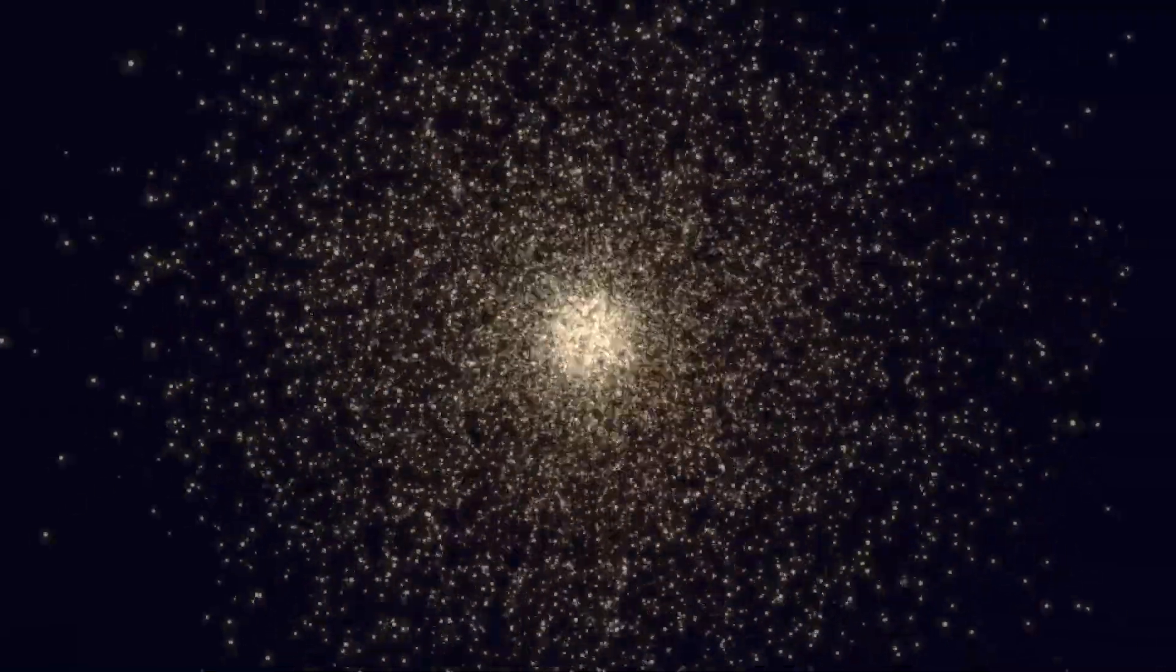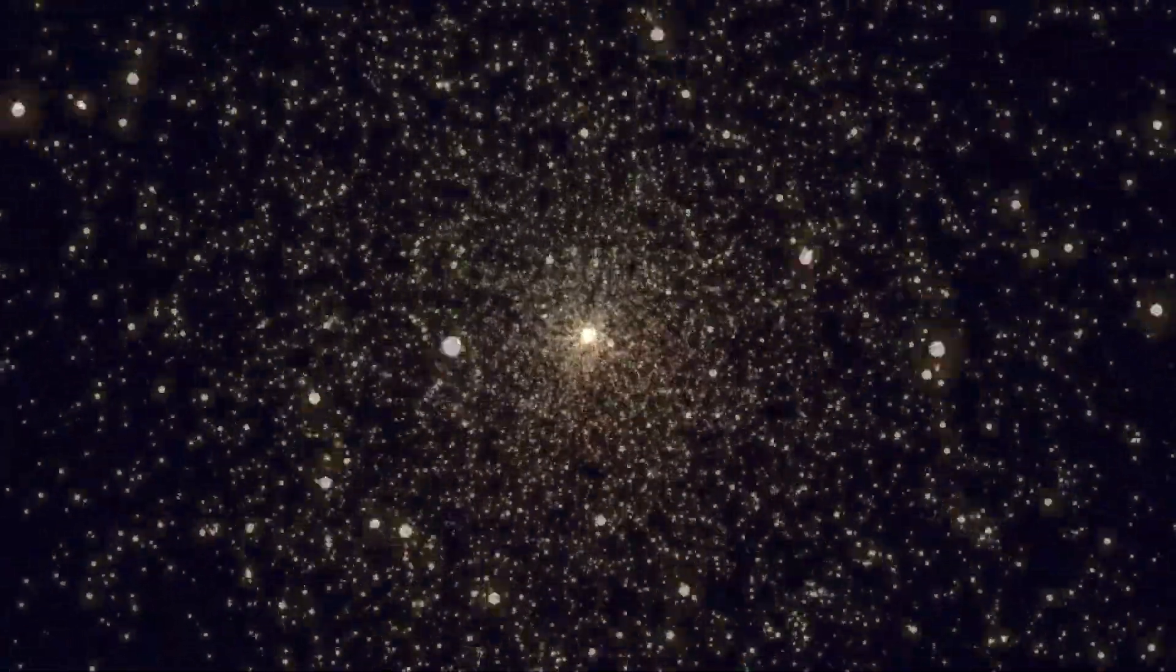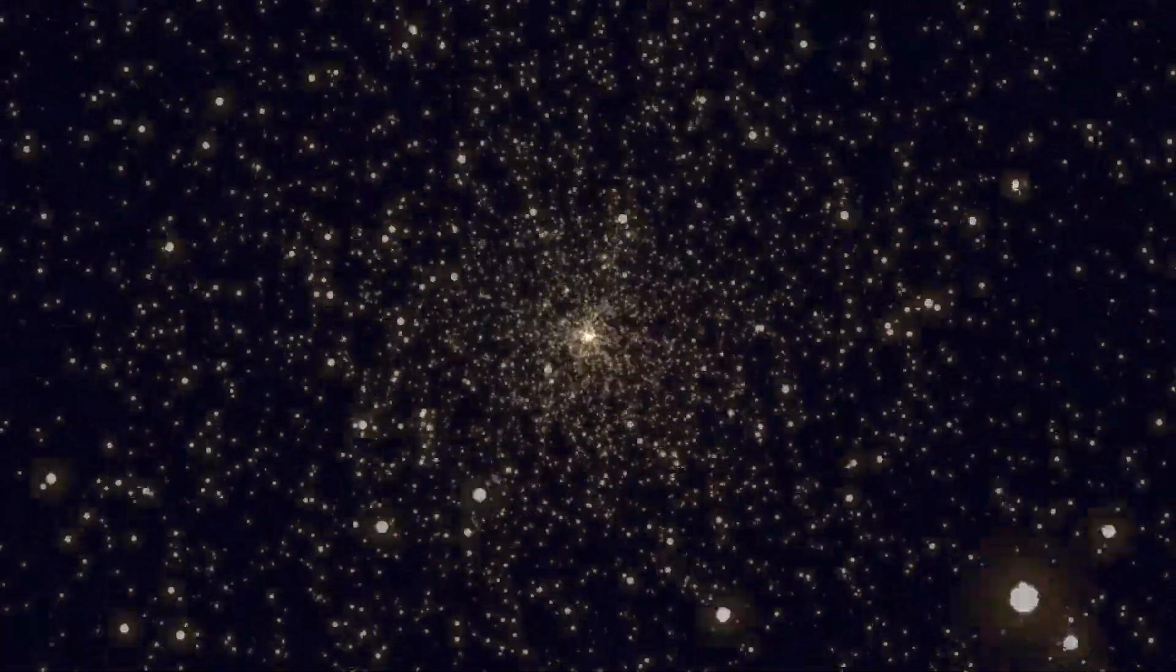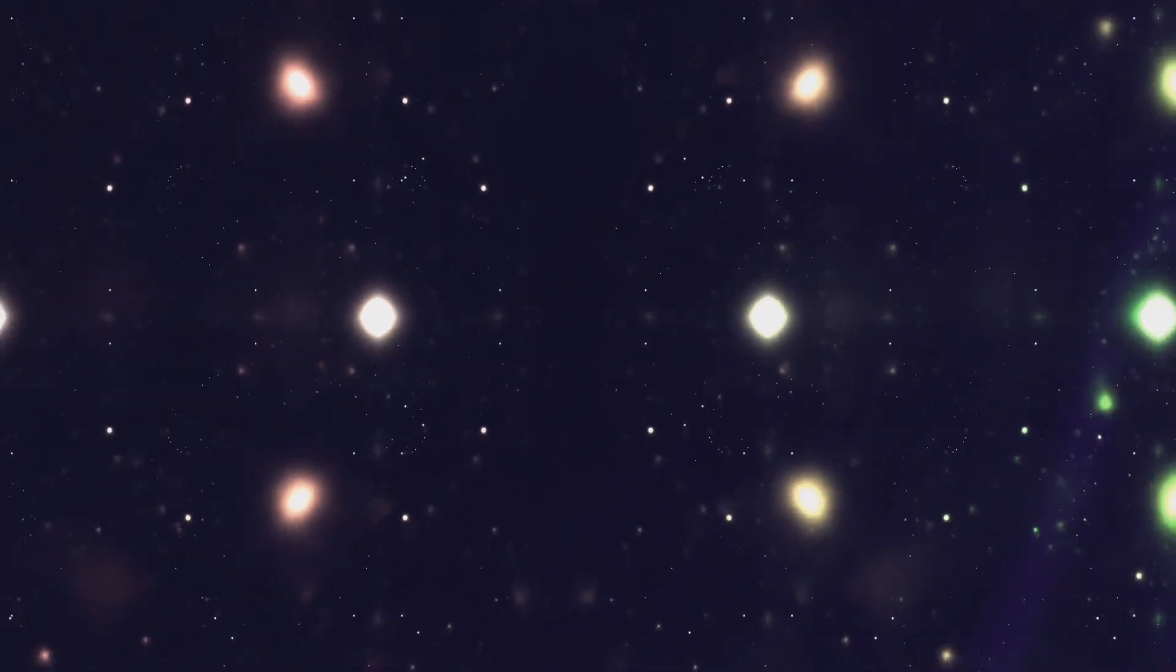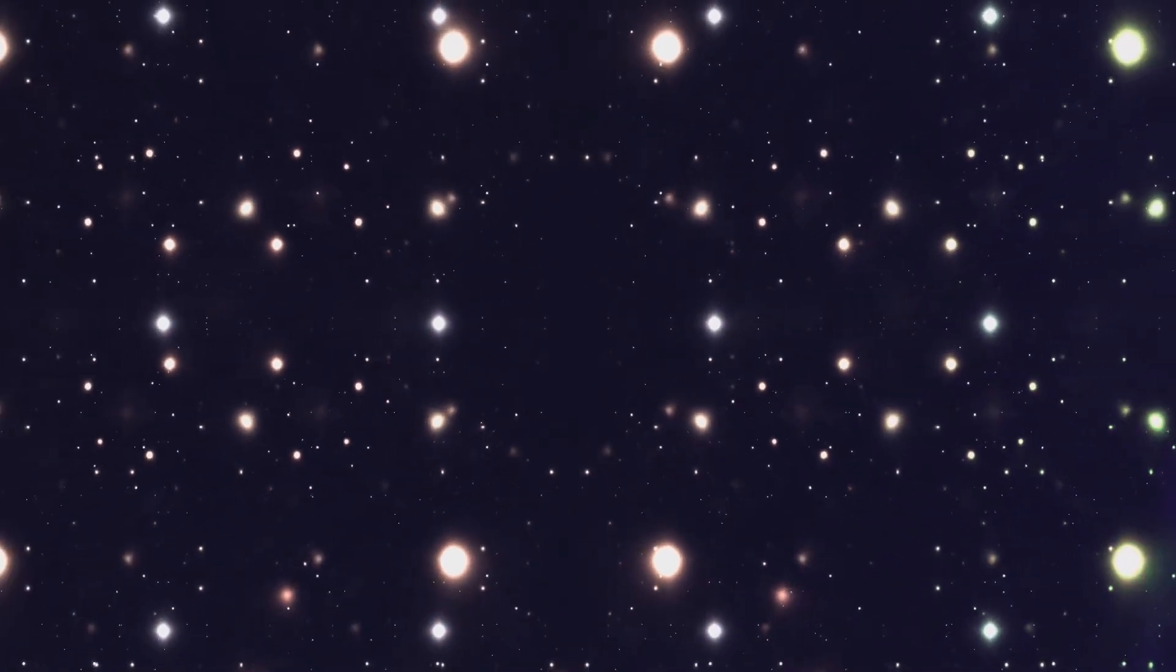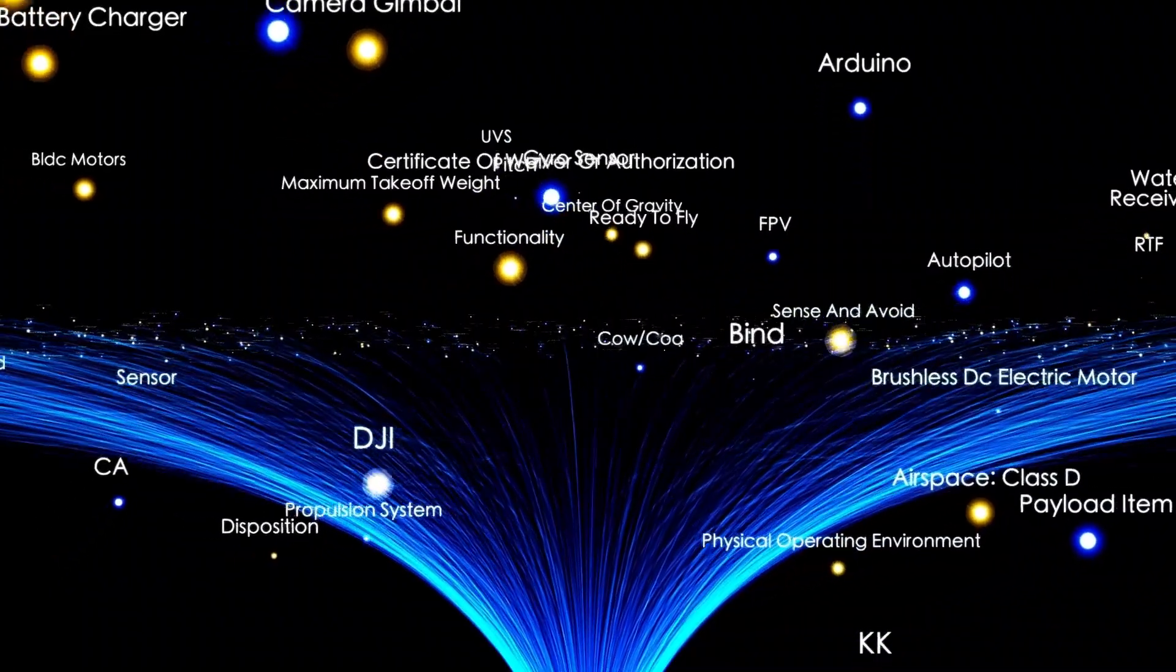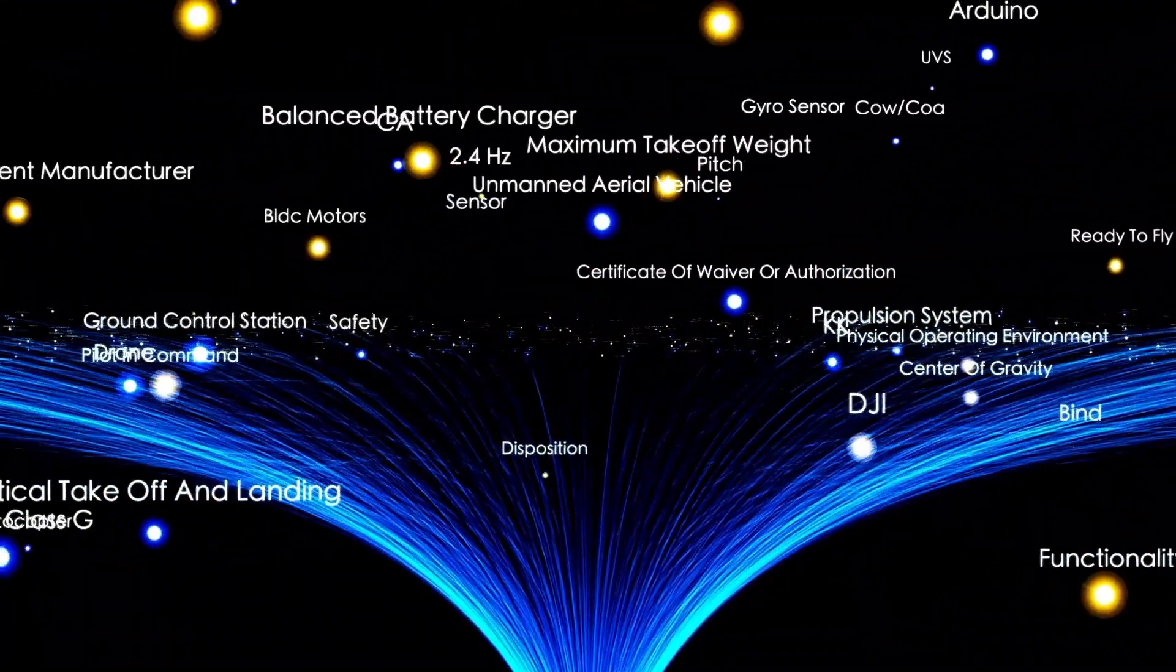Globular clusters, such as M92, consist of densely packed groups of stars believed to have formed simultaneously, simplifying the task of determining their ages for astronomers. Stars follow different life paths depending on their mass at birth. Larger stars burn through their fuel quickly and have shorter lifespans, while smaller stars endure for longer periods. Understanding how many stars in a cluster have transitioned beyond their primary fuel-burning phase provides insights into when the entire cluster originated.